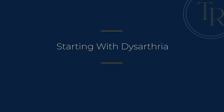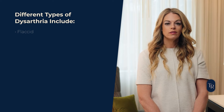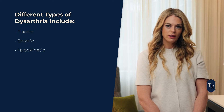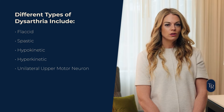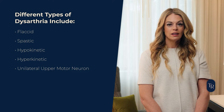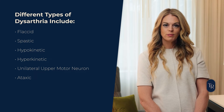Starting with dysarthria. Dysarthria is a motor speech impairment that affects the execution and control of motor speech movements. There are different types of dysarthria, like flaccid, spastic, hypokinetic, hyperkinetic, unilateral upper motor neuron, and ataxic, which are all classified by the neuroanatomical structures affected.